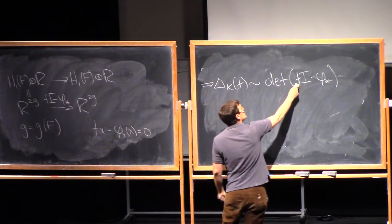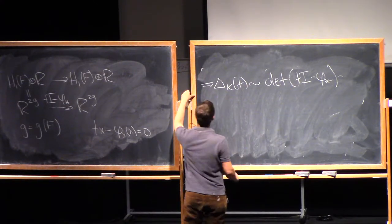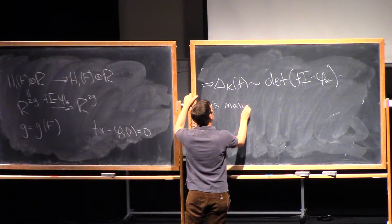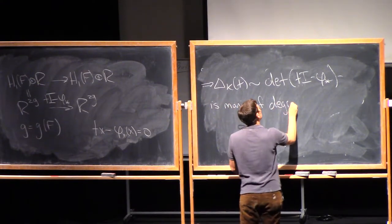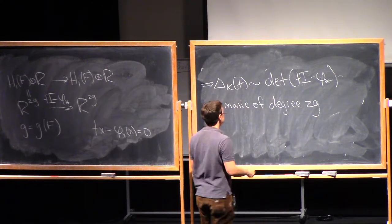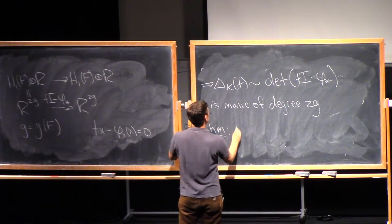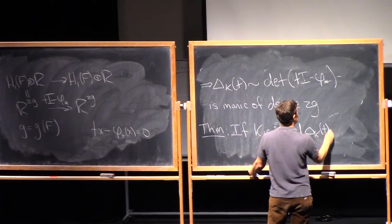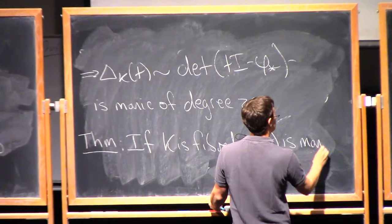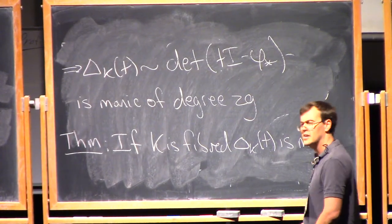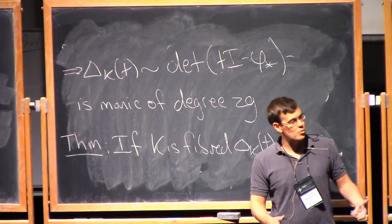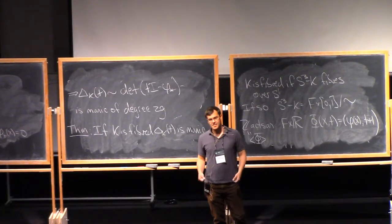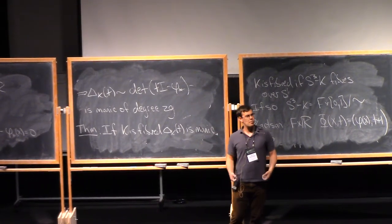In particular, the highest power of T comes from the determinant of this identity — T^{2g} — so it's monic of degree 2g. Theorem: if K is fibered, then Δ_K(T) is monic. This is actually a surprisingly effective way to tell whether or not a knot is fibered. For example, the trefoil has a monic Alexander polynomial, and it is indeed a fibered knot.